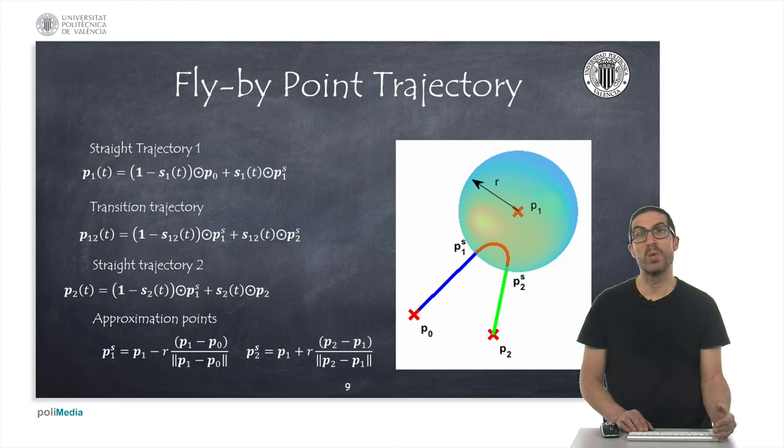To do this, we first compute the lines joining the points to determine the approximation points, here denoted as P1S and P2S. These points can be easily computed just considering the radius of a sphere, in this case given by the parameter R. This is a parameter, obviously, that has to be specified.